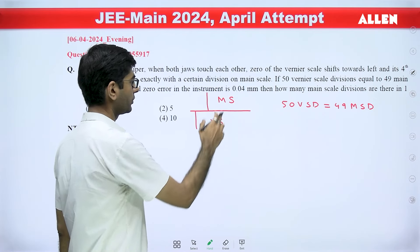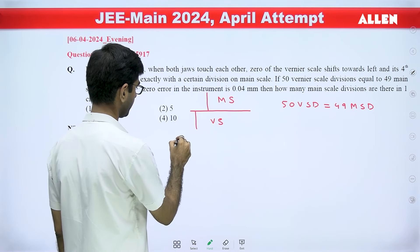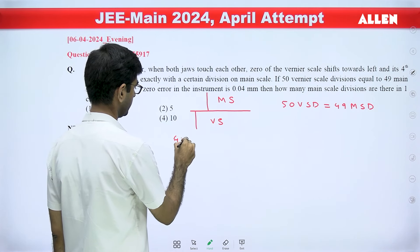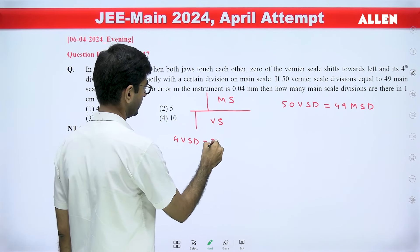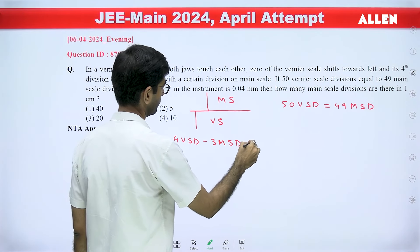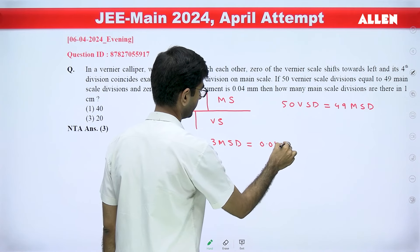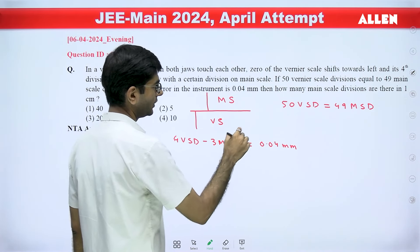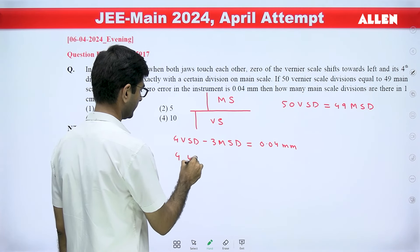The zero error value is given to us. We can say that 4 VSD minus 3 MSD should be equal to 0.04 mm. VSD is known to us as 49/50 MSD.